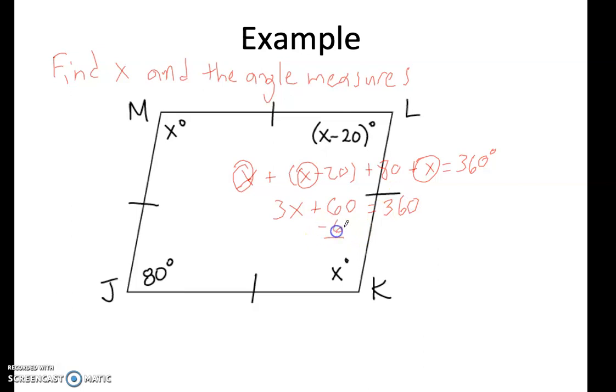Subtract 60 on both sides. Take your time and work the steps out. Divide by 3. We get that X equals 100.